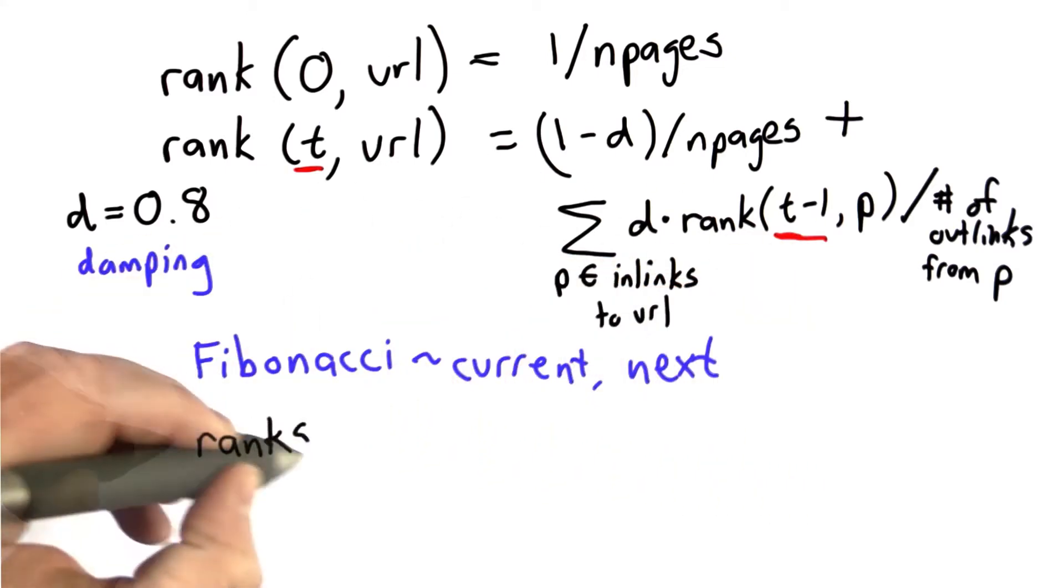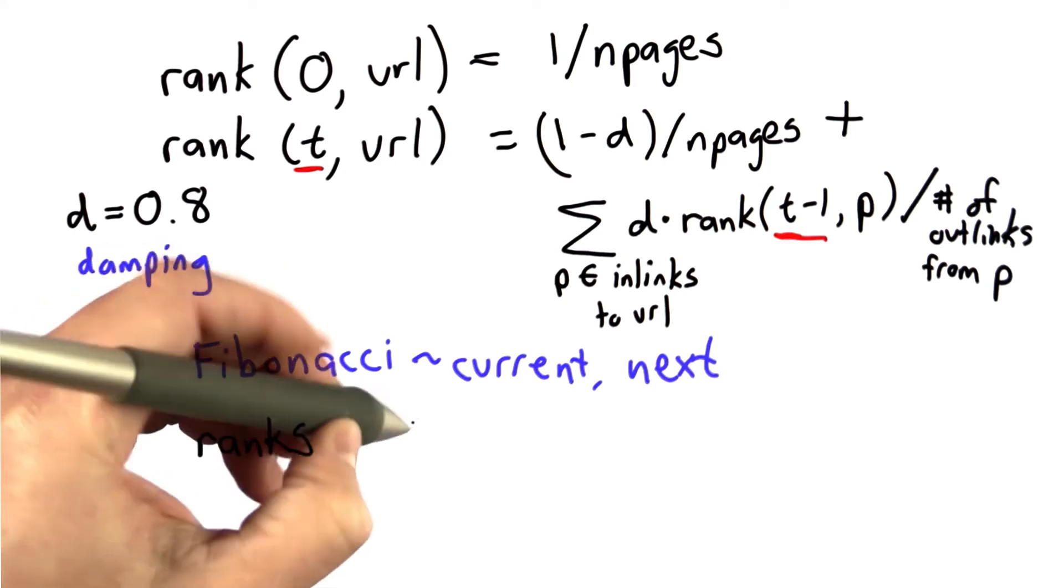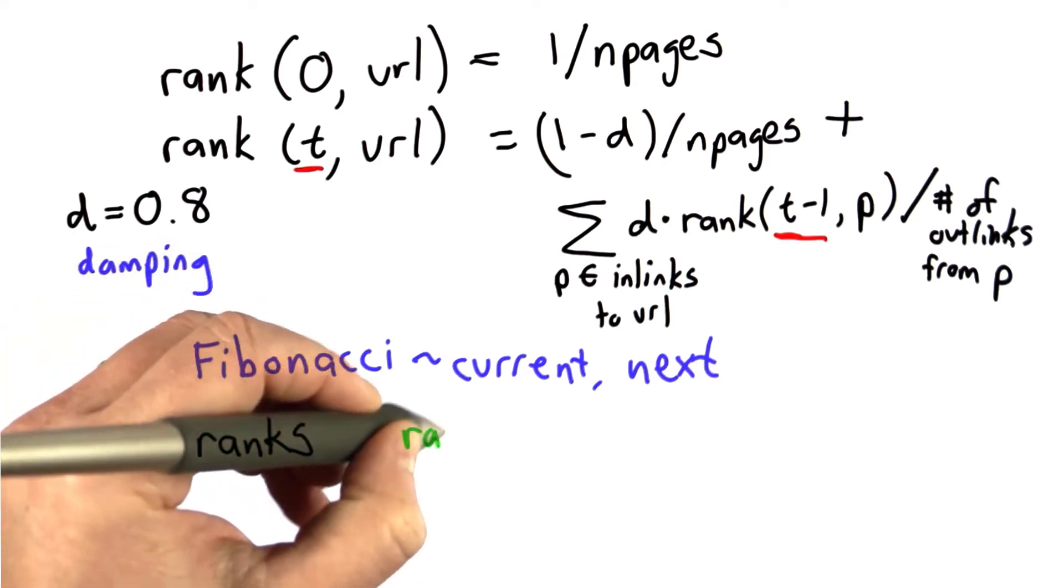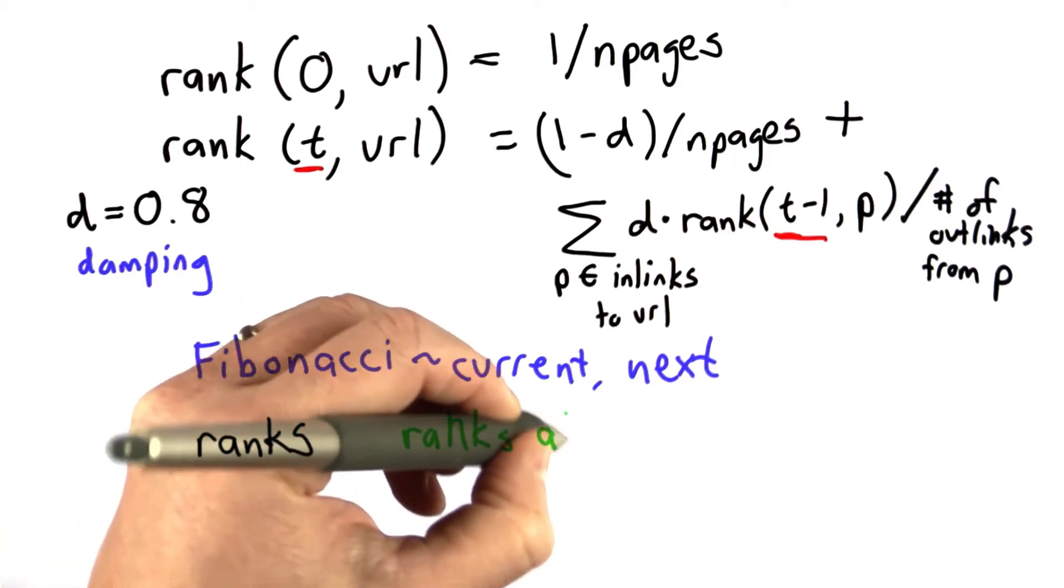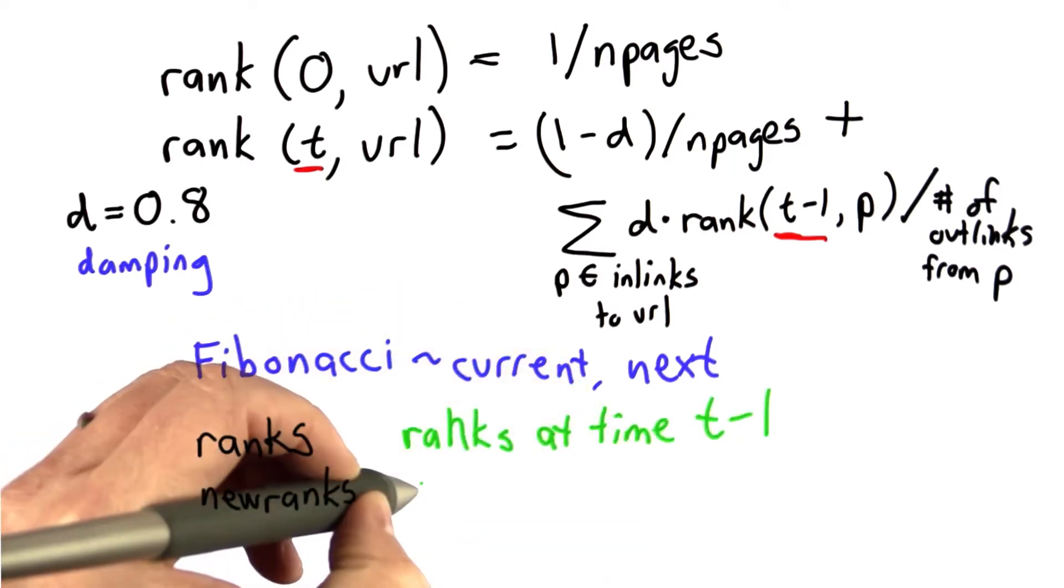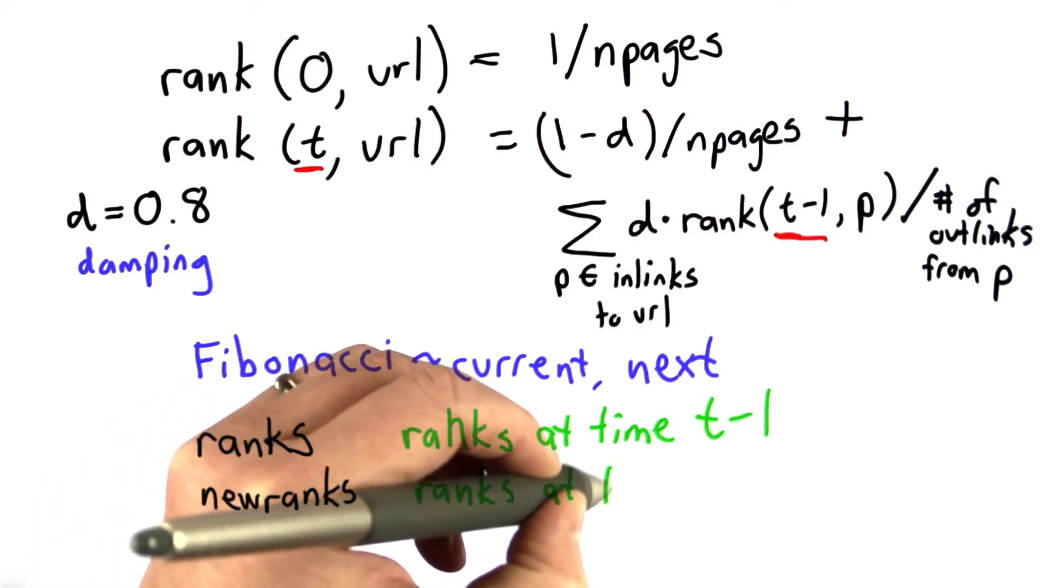So we're going to use the variable ranks to keep track of the current ranks, and as we compute the new ranks, we're going to use the variable newranks. So we'll use ranks. This corresponds to the ranks at time t minus 1, the ranks at the previous iteration, and we'll have a variable newranks, which is the ranks at time t.